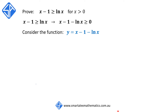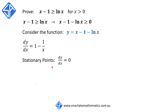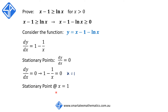To start, we're going to find the first derivative of the function. Given y is equal to x minus 1 minus log of x, dy on dx is equal to 1 minus 1 on x. To find the stationary point we're going to solve for dy on dx is equal to 0. When dy on dx equals 0 we have 1 minus 1 on x is equal to 0, and solving for x we get x is equal to 1. This means that we have a stationary point at x is equal to 1.